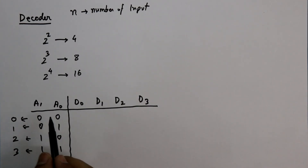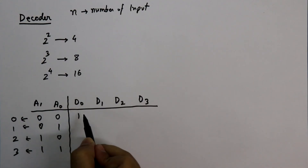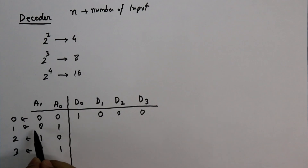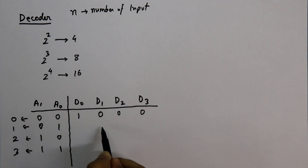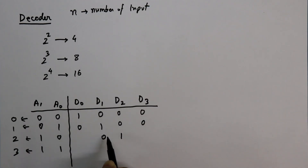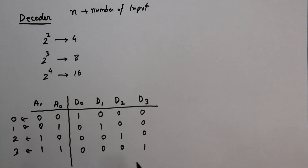So whenever the input is 00, only D0 will be 1 and the other three outputs will be 0. For 01, only D1 will be 1 and the other three will be 0. For 10, D2 will be 1. For 11, only D3 will be 1. This is our truth table.